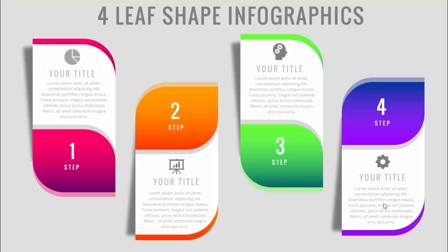In today's tutorial I'm going to show you how to create a four-leaf shape infographic slide in PowerPoint. I've added a leaf here with gradient fill and step labels. You can add your title, detailed text, and icons. I've added a shadow effect as well. There are four steps, each with a different color, pointing in different directions.